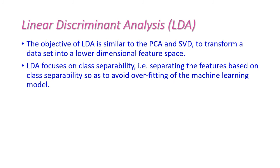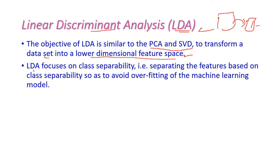The third one is Linear Discriminant Analysis, that is LDA. It is similar to PCA and SVD in that it transforms the dataset into a lower-dimensional feature space — converting a very big dataset into a lower-dimensional one. Unlike other models, LDA focuses on class separability, meaning features are separated based on their classes, so that it avoids overfitting of the machine learning model.